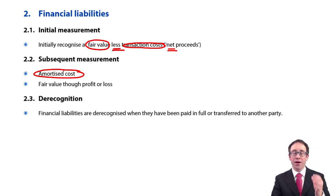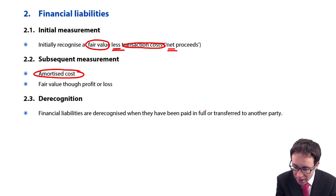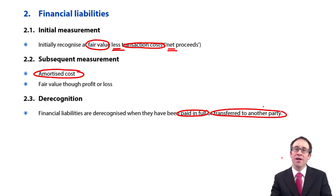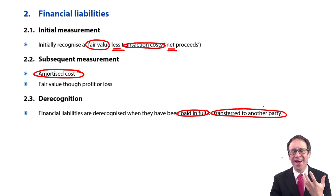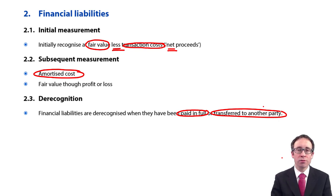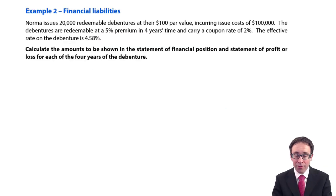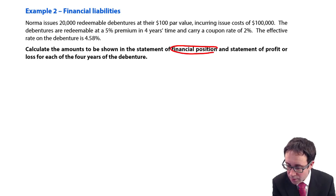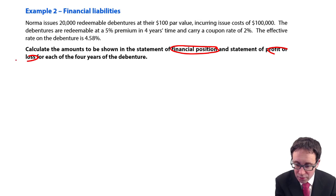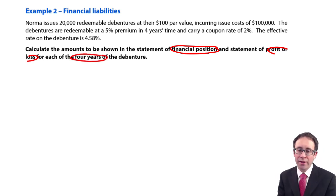We de-recognise the liability when it has finally been paid in full or we have transferred it to another party — so somebody else therefore has that obligation. The key bits are: initially it is at net proceeds, and then we measure it subsequently at amortised cost. So let's have a look at the example of financial liabilities. It says here: calculate the amount to be shown in the statement of financial position and statement of profit or loss for each of the four years of the debenture.